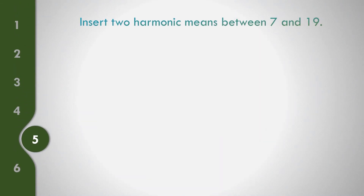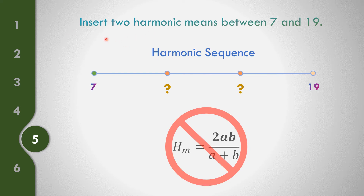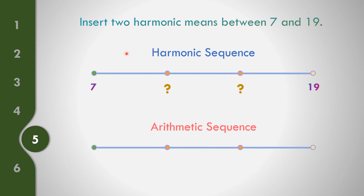Question number 5: Insert 2 harmonic means between 7 and 19. The harmonic sequence has first term 7 and last term 19. Since 2 terms are missing, we cannot use the two-term formula. Instead, let us get the reciprocals: the reciprocal of 7 is 1/7 and the reciprocal of 19 is 1/19, converting to an arithmetic sequence.